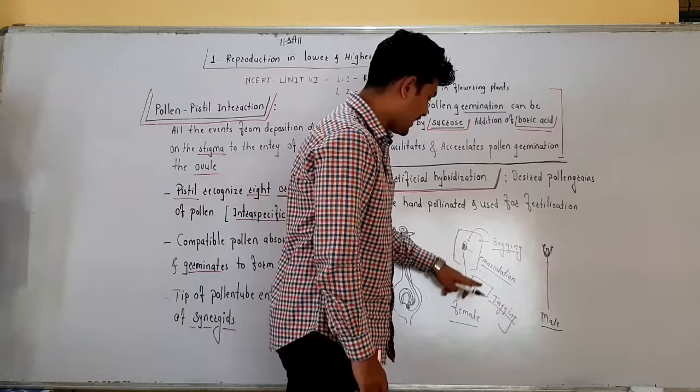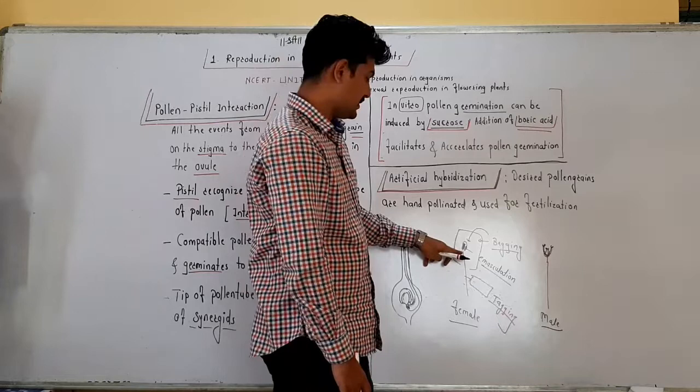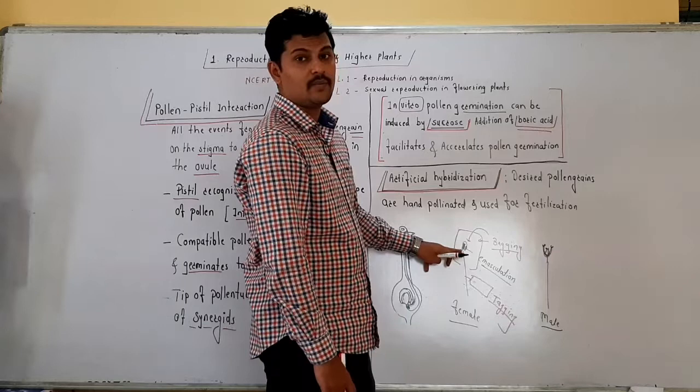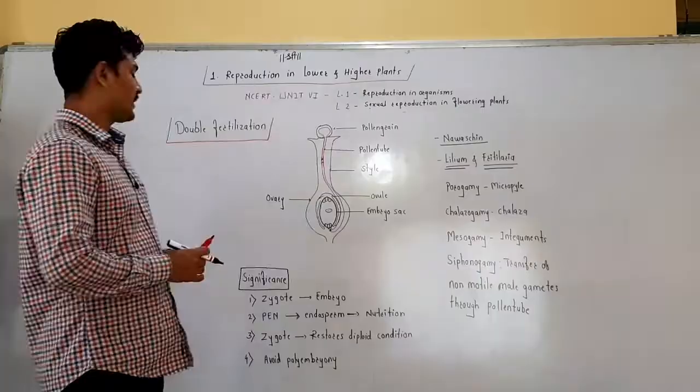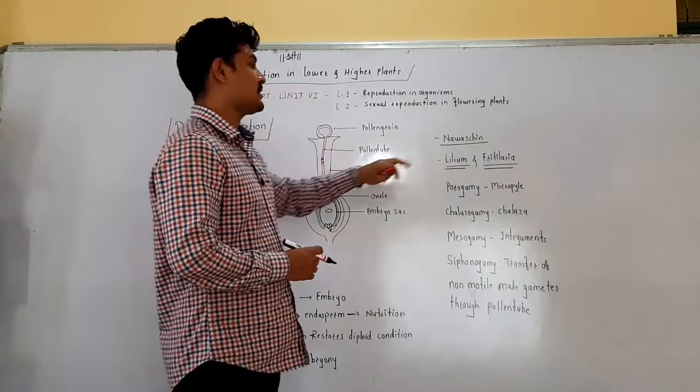As we have covered the flower with a bag, no other pollen grain can fertilize the stigma, and seeds will be produced by the process of cross-pollination or artificial hybridization. Let us study about double fertilization. Double fertilization is the characteristic feature of angiosperms. It was first discovered by Nawaschin in plants like Lilium and Fritillaria.